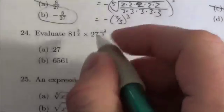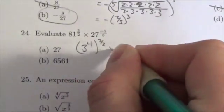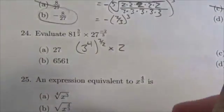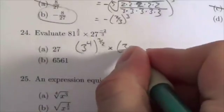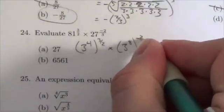But notice 81 is 3 to the four, to the three halves, times 27. Sorry, I shouldn't write it as 27. The whole point was it has the same base here, so 3 cubed to the negative two-thirds.